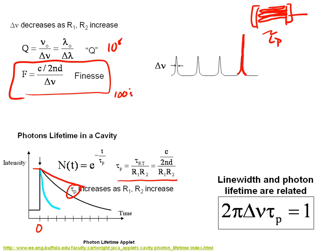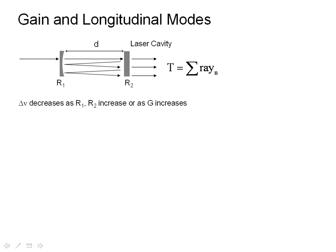There's one other thing we need to do before we wrap up this mini lecture, and that's to look at what happens in the cavity when we have gain. We know that if we increase the reflectivity, we can calculate the transmission as a function of frequency by summing up all the rays. And as the reflectivity gets higher, the line width increases because the cavities are trapped longer.